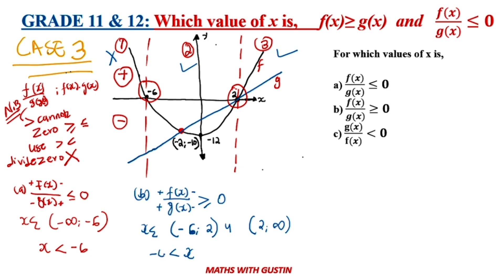So we go from negative six up to two, and then also from two up to positive infinity. In inequality notation: x is greater than negative six but less than two, or x is greater than two. We do not put the equality sign at negative six or two because we do not want g of x to be zero — that condition applies regardless of what the question states.